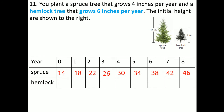Now the hemlock tree grows 6 inches per year. At year zero the initial height is 8 inches — not zero, because that's its starting height. So it starts at 8. Eight plus 6 is 14, plus 6 is 20, then 26, 32, 38, 44, 50, and 56.